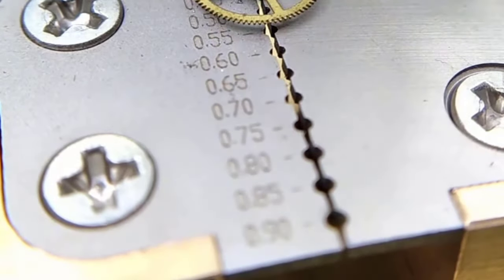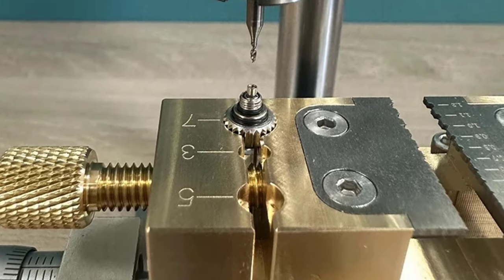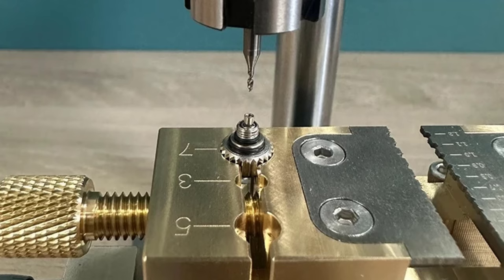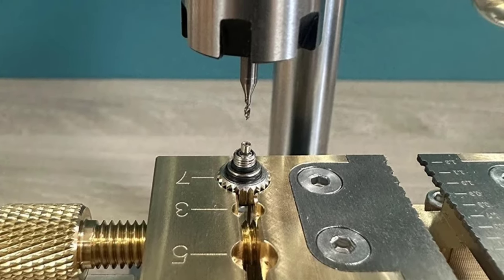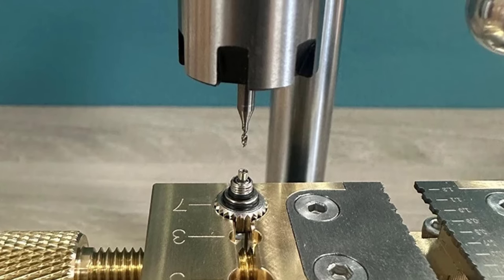One of the standout features of this tool is its ability to remove broken screws from the movement plate, a common issue in watch repair. The precision drill allows you to target and remove even the smallest screws with accuracy, minimizing the risk of damaging surrounding components.